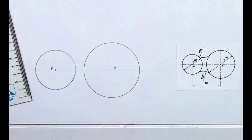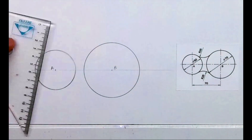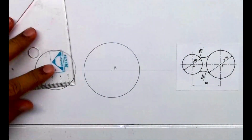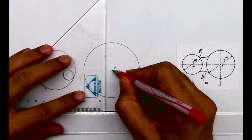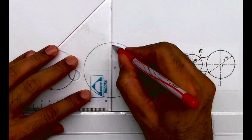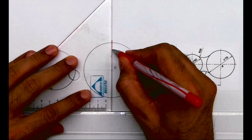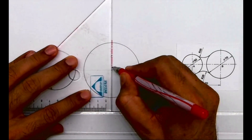After that, we need to draw radius 25. First, we will draw the axis line.